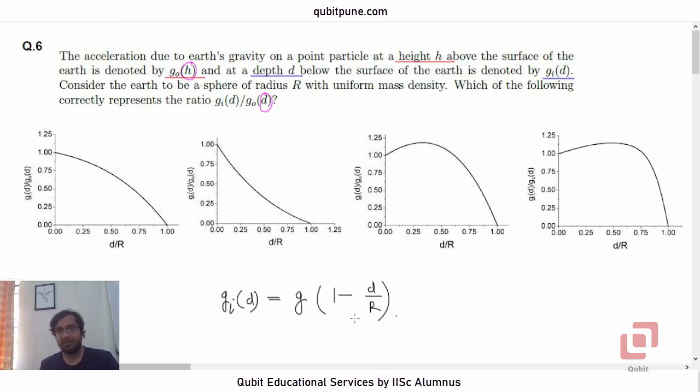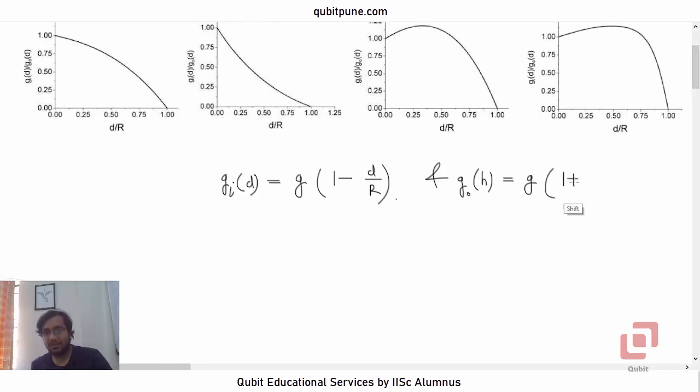And G0(h), now we are outside the surface of the Earth in the atmosphere or in the space above the surface of the Earth. So how does that acceleration vary when compared to the one at the surface? It's G into 1 plus h upon R raised to negative 2.